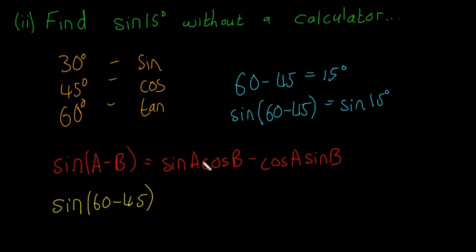We're going to get sine of 60 minus 45, so 60 is going to be A and 45 is going to be B. Anywhere we see A we're going to put 60, and anywhere we see B we're going to put 45. So that's going to equal sine of 60 multiplied by cos of 45 minus cos of 60 multiplied by sine of 45.